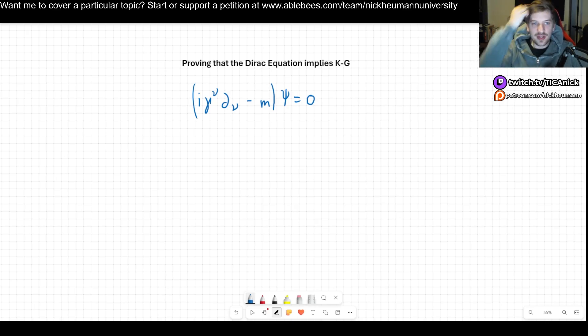Welcome! In this video I will prove that the Dirac equation implies the Klein-Gordon equation. What that means and why it is important is because any solution to the Dirac equation will have its components also satisfy the Klein-Gordon equation, and that's going to be very important.